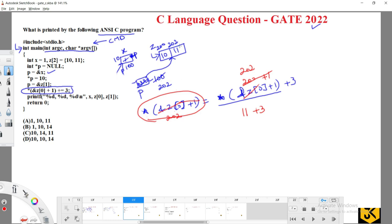Finally they are trying to print the values. What is the value of x? x value is 10. What is z[0]? z[0] is 10. And z[1]? z[1] value is 14. So your answer is option D, which is the correct answer. I hope you understood clearly, thank you.